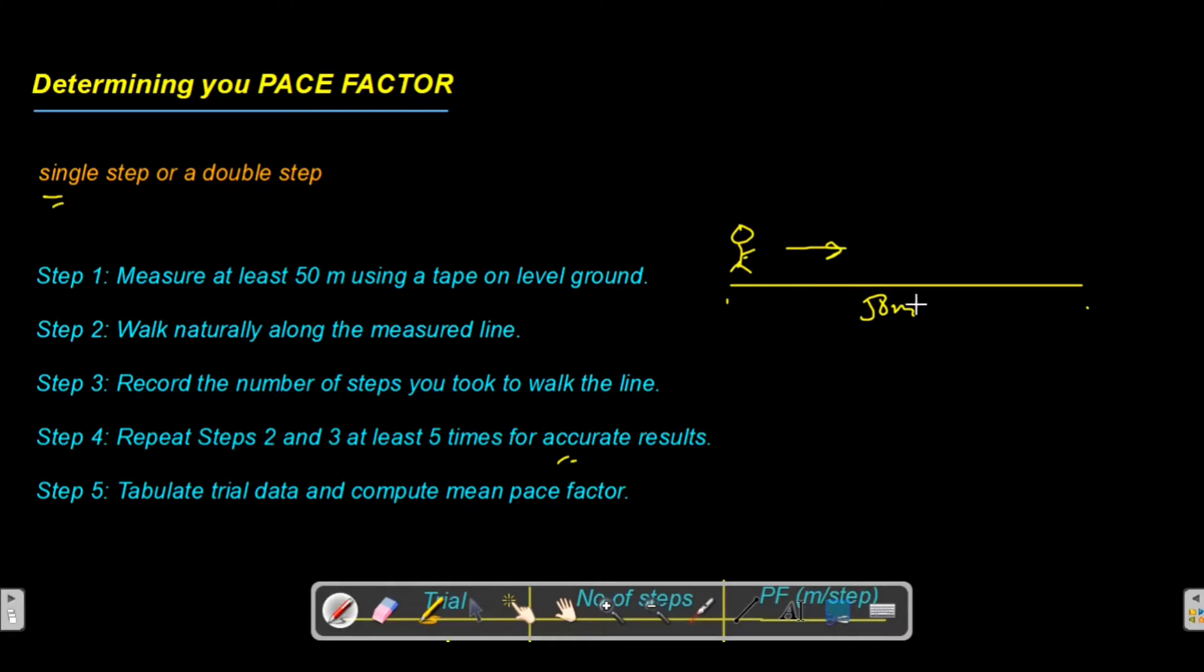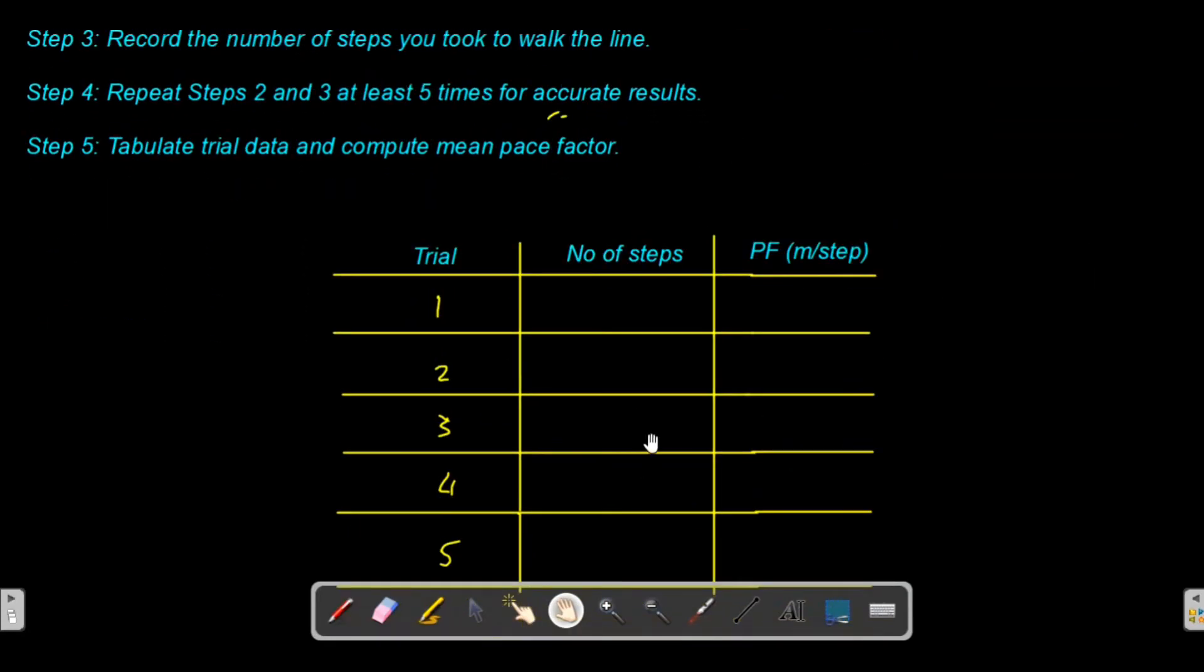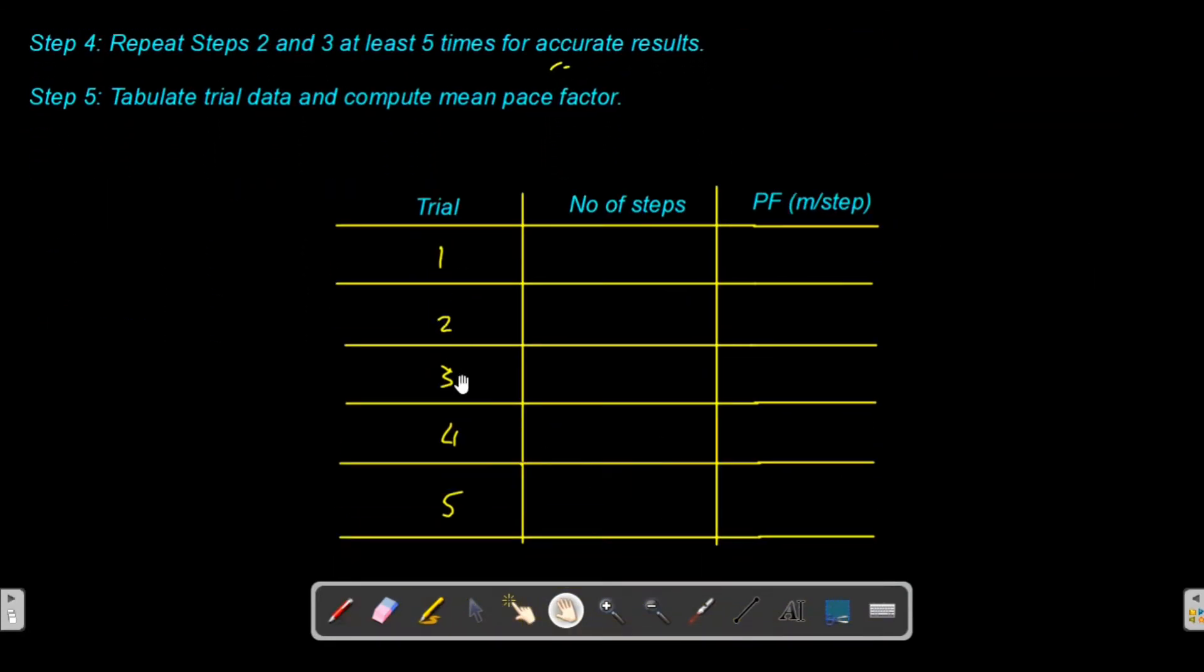For tabulating your trials, here's an example table. For trial 1 you walk 67 steps, trial 2 you have 68 steps, then 66, then 67 again, and then 68.